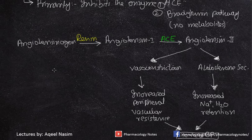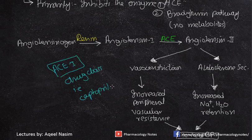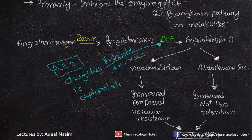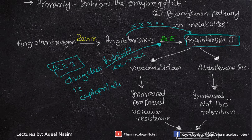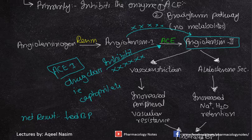When ACE inhibitors such as captopril are given, they block ACE — they inhibit ACE. So there is no conversion of angiotensin 1 into angiotensin 2. If there is no angiotensin 2, there will be no vasoconstriction and no aldosterone secretion, so ultimately the net result is decreased blood pressure.